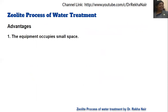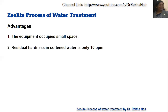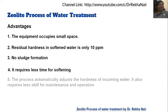The advantages of the zeolite process are: the equipment occupies small space, unlike lime-soda where the equipment was larger; the residual hardness of softened water is only 10 ppm, which was more in the case of lime-soda; there is no sludge formation, whereas lime-soda produced a lot of sludge that was difficult to manage; it requires less time for the softening process; the process automatically adjusts to the hardness of incoming water; and it requires less skill for maintenance and operation.